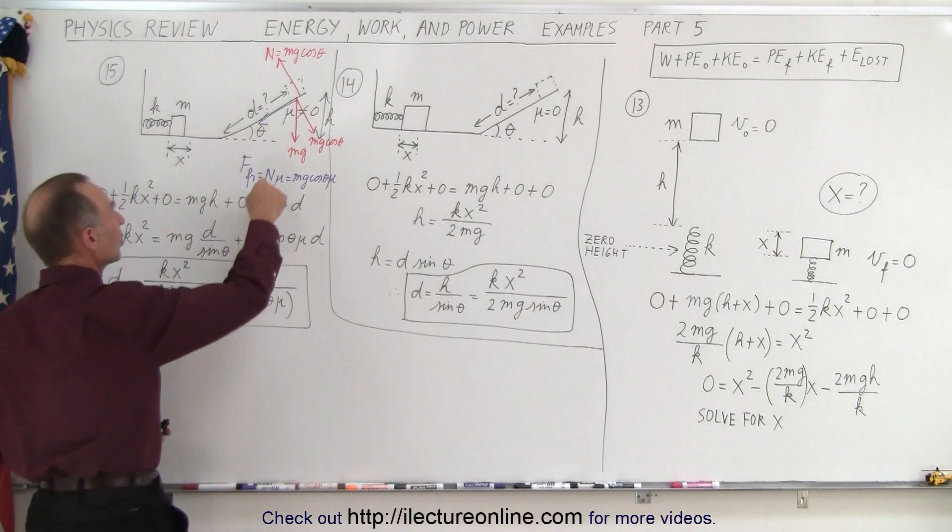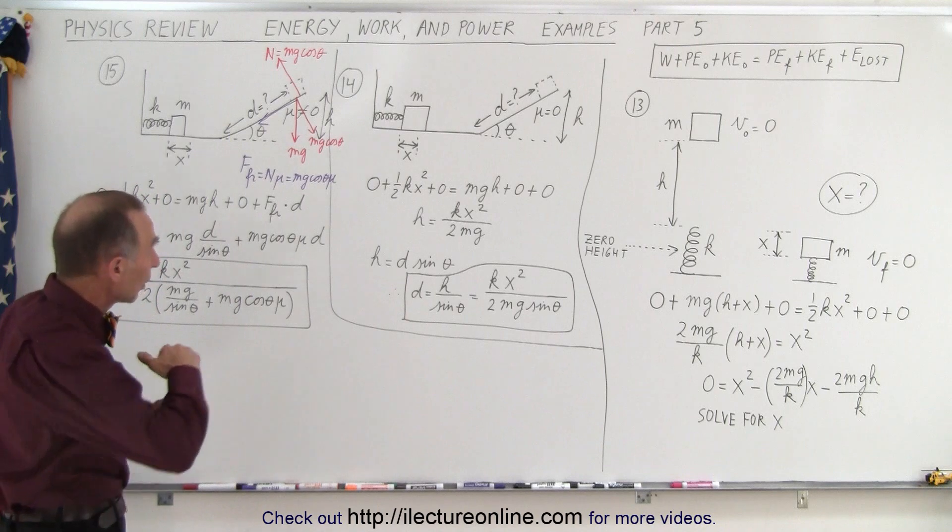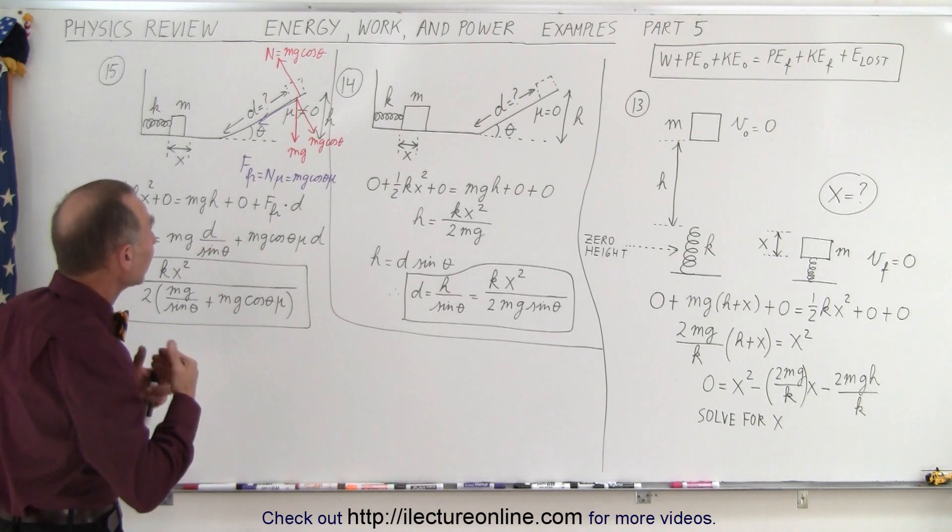What if there's friction on the hill? So μ is not equal to zero on the incline.